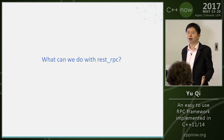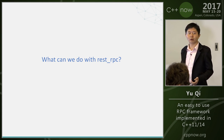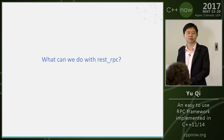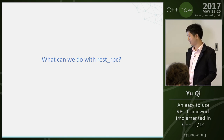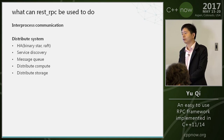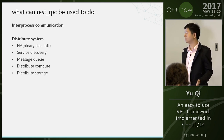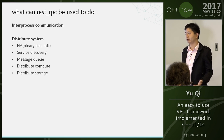Now you know how REST-RPC works. You can use it to develop distributed systems — for example, a high-availability system, a service discovery system, or distributed storage and compute.